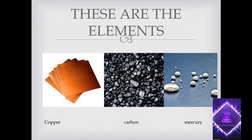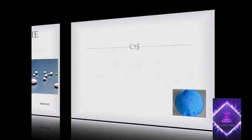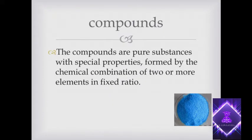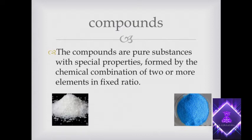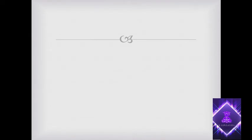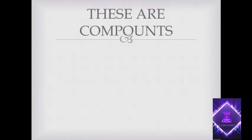Further examples of elements include copper, carbon, and mercury. Compounds are pure substances with special properties formed by the chemical combination of two or more elements in a fixed ratio. Examples include sodium chloride, copper sulfate, and glucose.